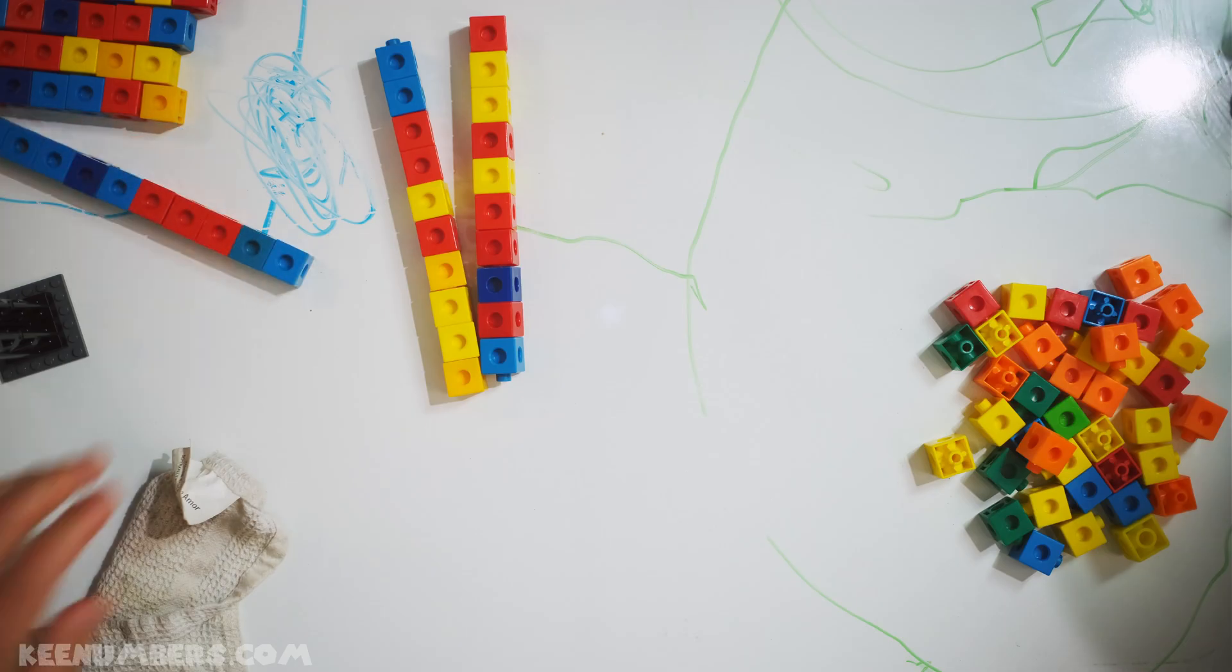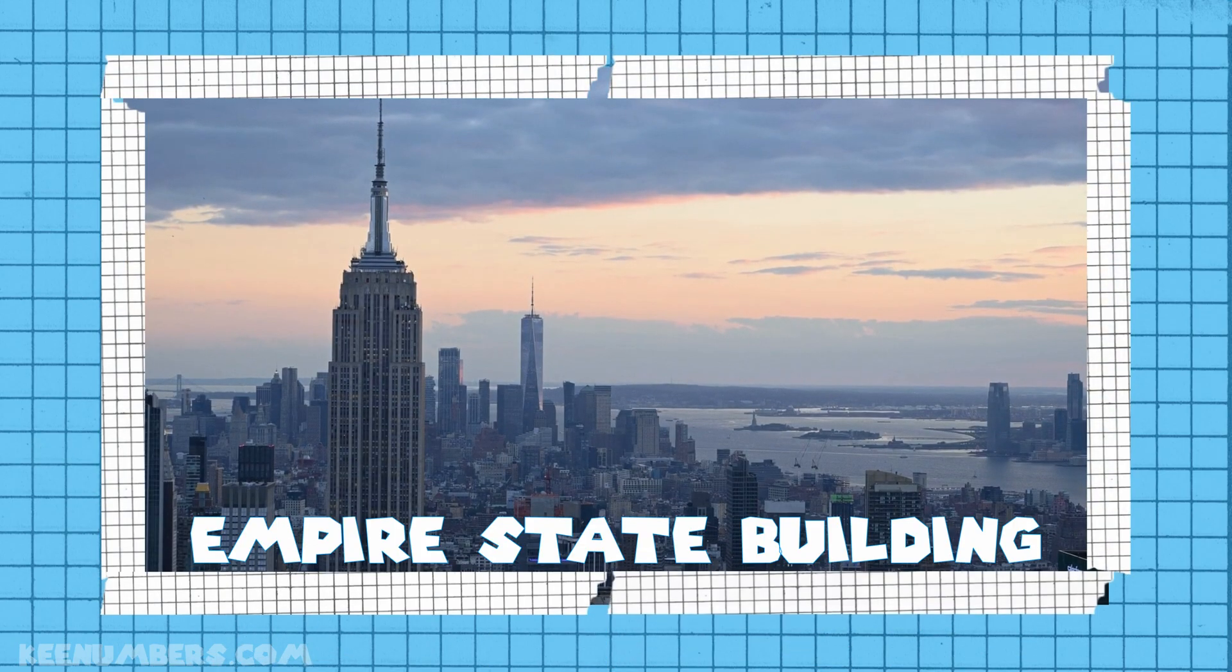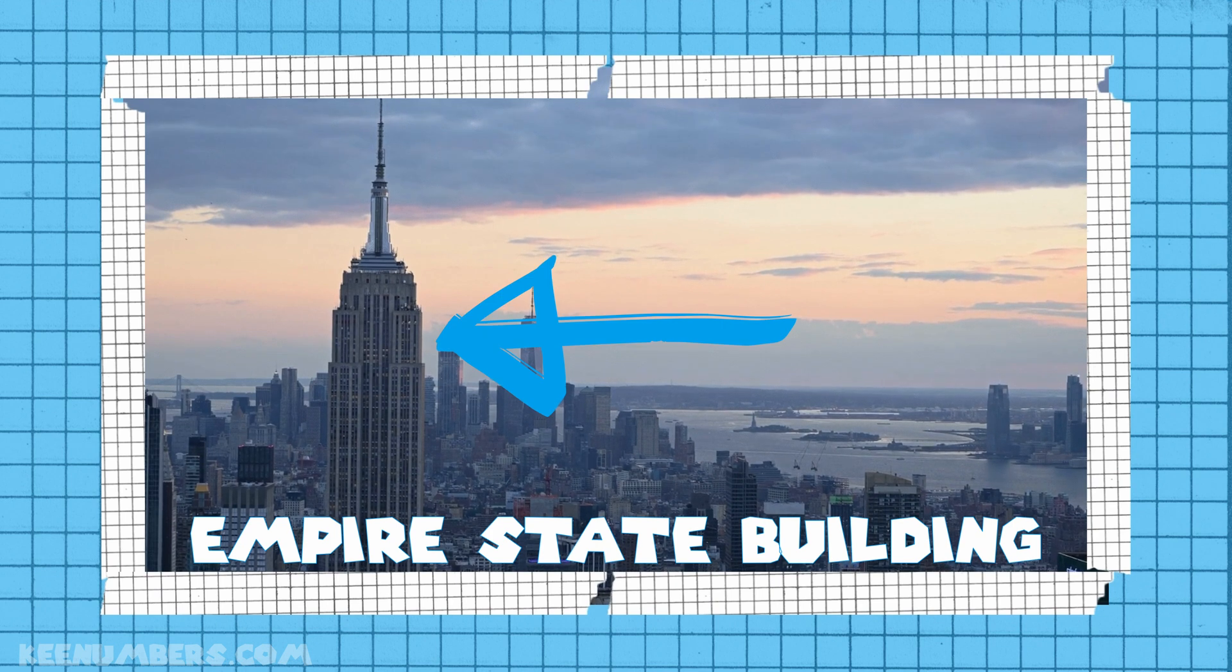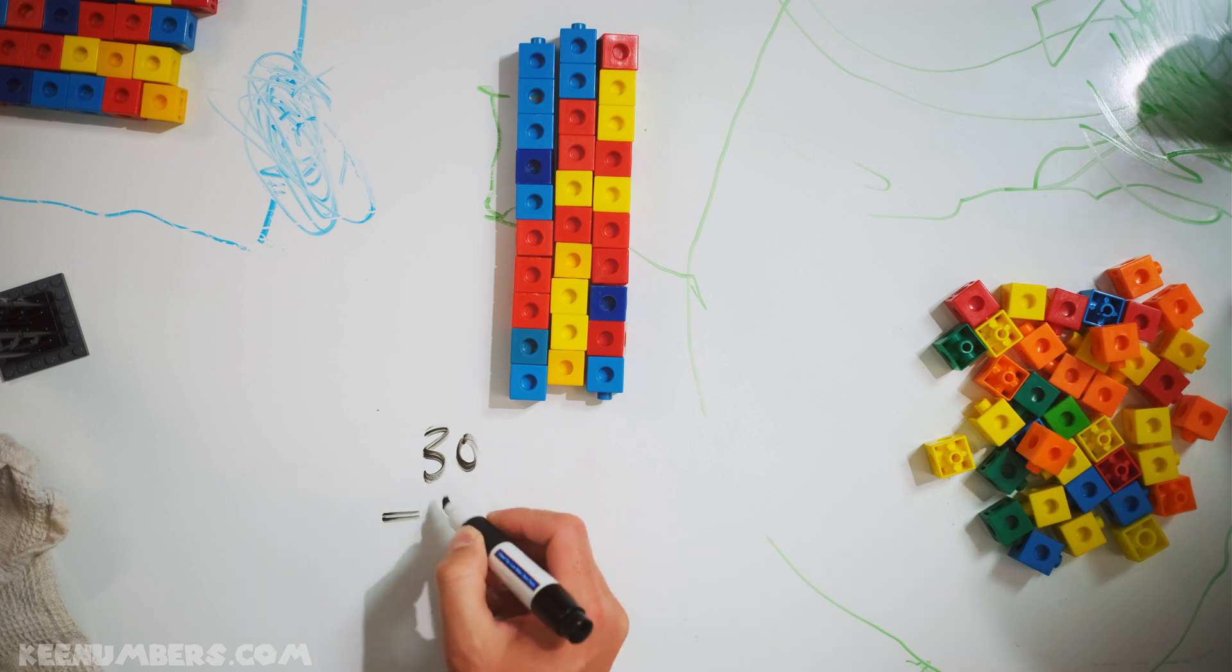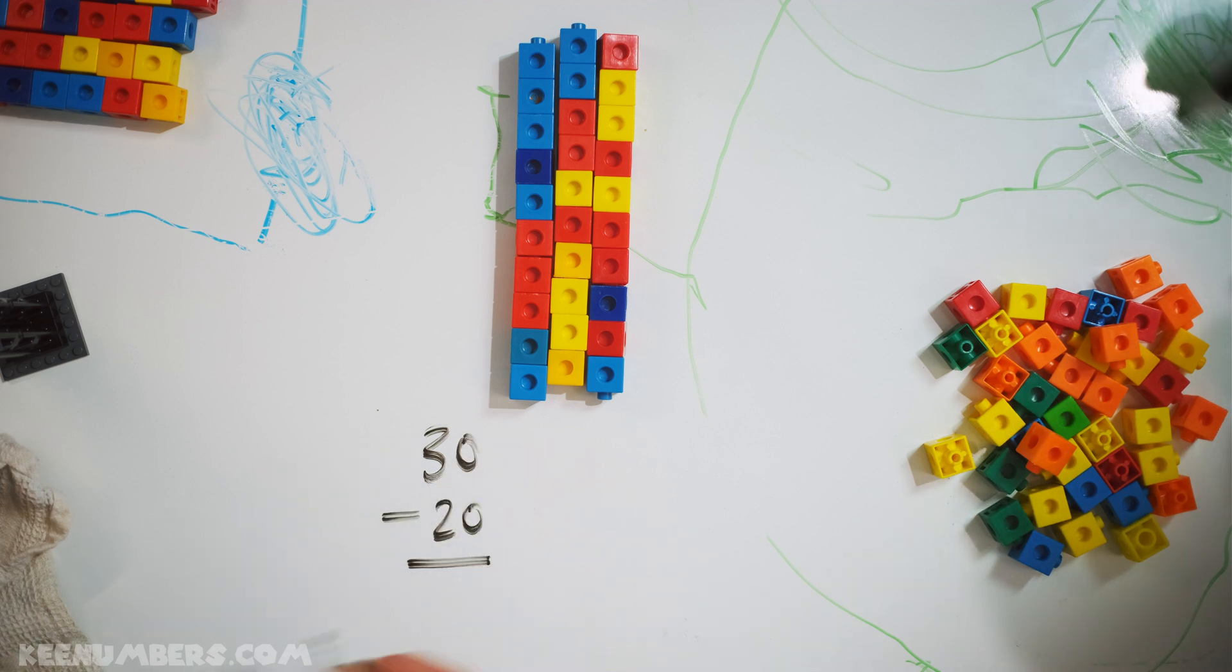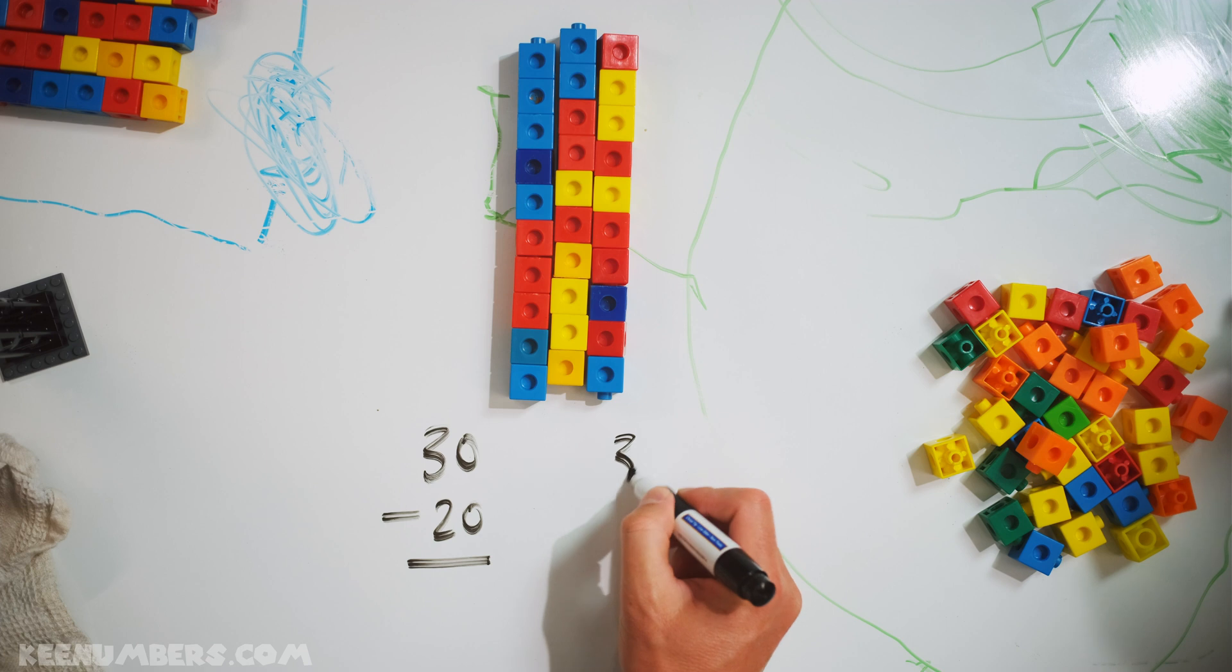You can always count on the Empire State Building. Let's do 30 minus 20. Well that's 10. Oh that's too easy.